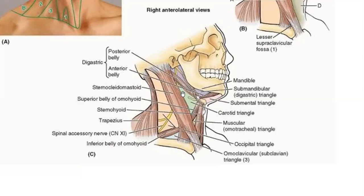So you see this triangle is subdivided by two muscles — this is the omohyoid and the digastric. It divides into four parts, which are: submandibular or digastric, submental — this is submental, which is single in the median plane; the rest are two on each side. Like this is submandibular, then there's the carotid triangle — very important, due to the presence of the carotid vessels, the common carotid artery and its branches. And one is the muscular, the omotracheal triangle.